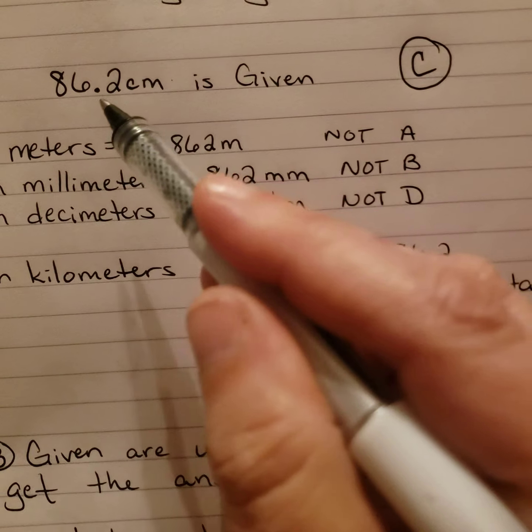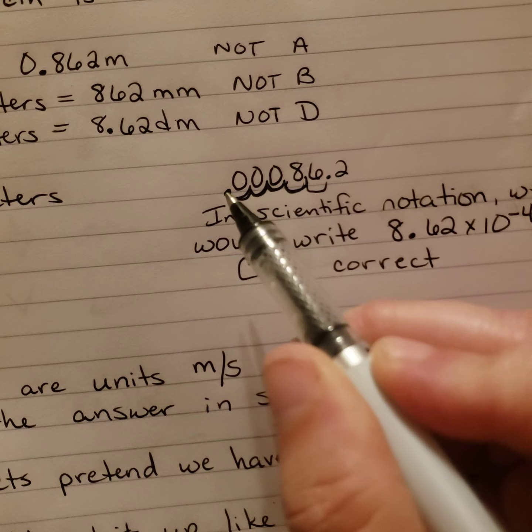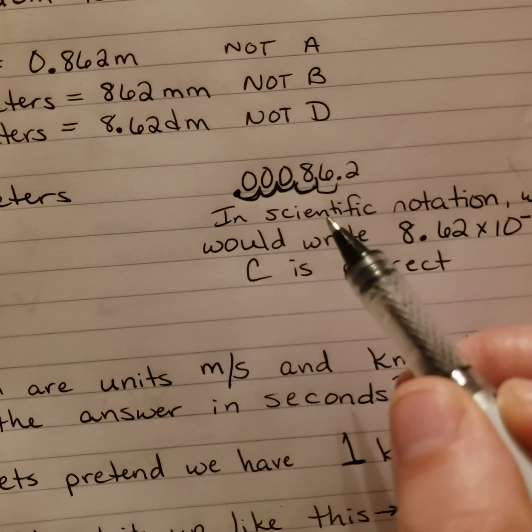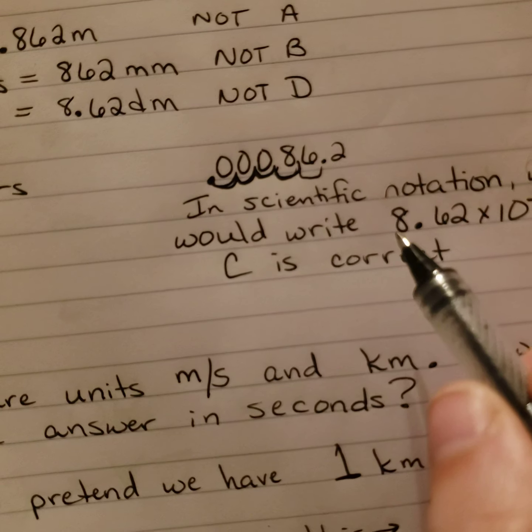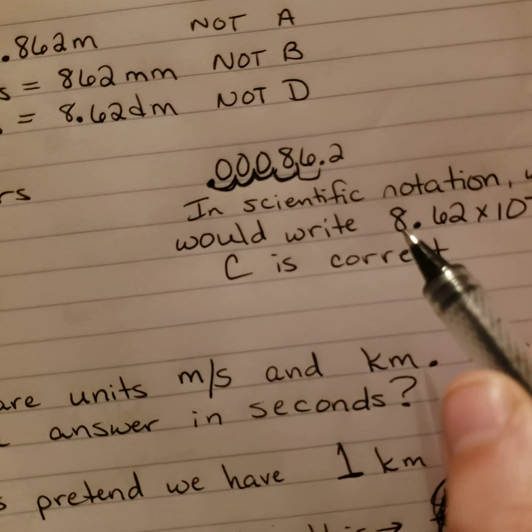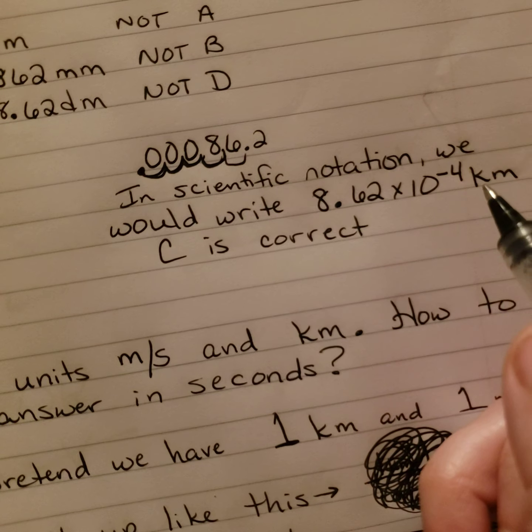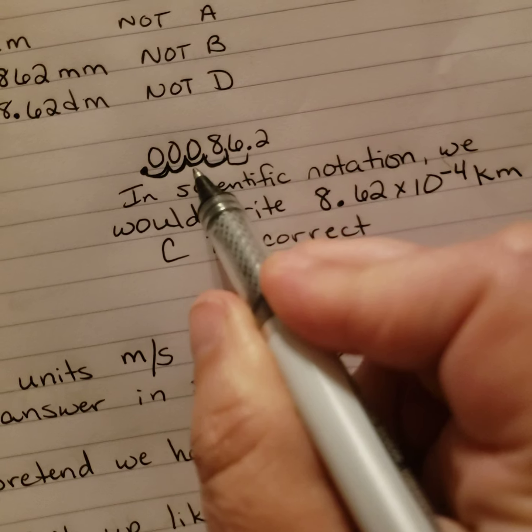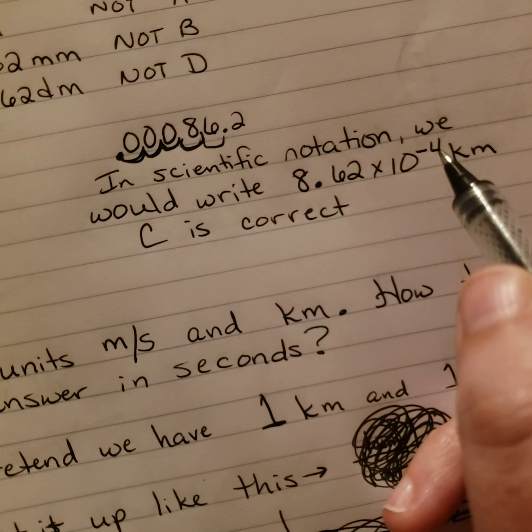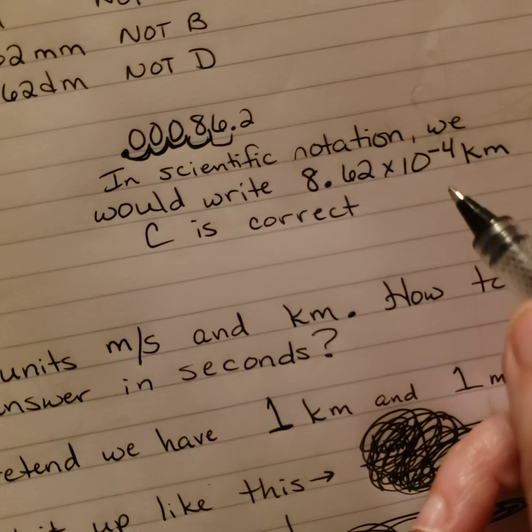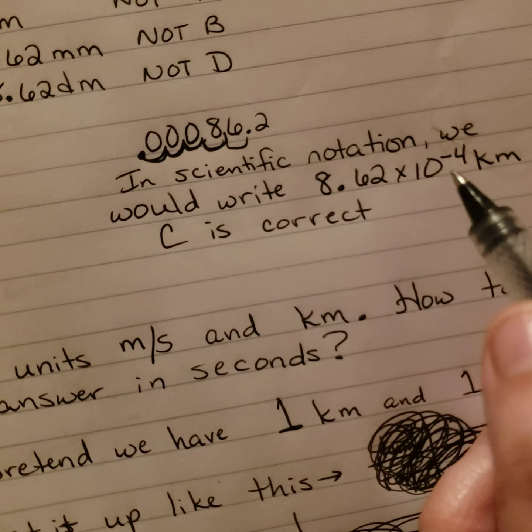So let's take a look at kilometers. Since it's 86.2, we're going to move this 1, 2, 3, 4, 5 places. But when we write that in scientific notation, your decimal only goes after the first non-zero number. So in this case, it's 8, so 8.62. And then how many places would we have to move it to the left to make it kilometers? From the 8, we'd move it 1, 2, 3, 4. So we'd make that a negative 4 because we're moving to the left, making the number smaller. Therefore, C is correct. It's 8.62 times 10 to the negative 4th kilometers.